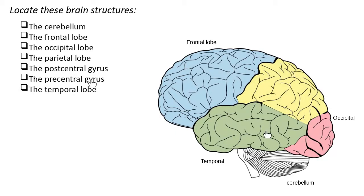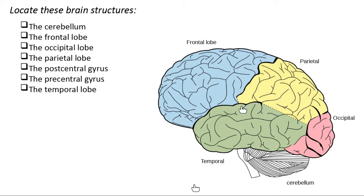The main thing we remember the temporal lobe for is the process of hearing. But it also has another function — it is also involved in the sense of smell. So the temporal lobe, found here at your temples, helps with both hearing and smell. That leaves our last visible lobe: the yellow lobe in the back part of the brain is called the parietal lobe, situated between the frontal lobe and the occipital lobe, right next door to the temporal lobe.